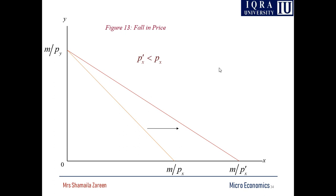We are talking about the case of a falling price of x commodity — you can name this commodity food. Here m over Py is shown and the income m remains the same. Whenever the price of any commodity falls, the purchasing power of the people increases and they will purchase more of the good, so the budget line shifts outward. If the price of x increases, you can purchase fewer food items, so the budget line shifts inward — your purchasing power has been reduced. This is all about the theory of the budget line.